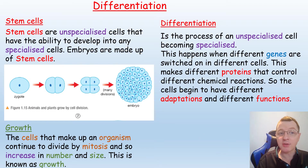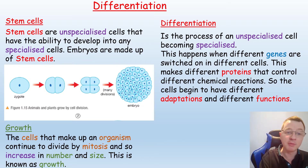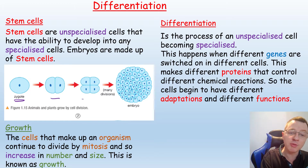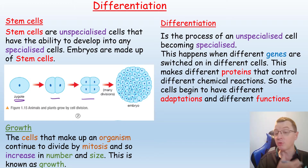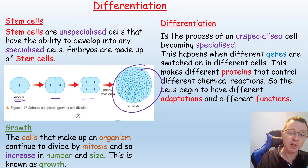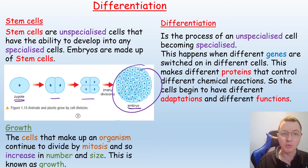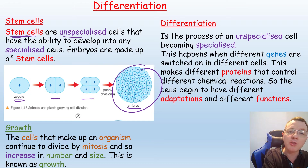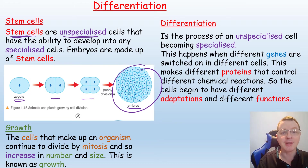Before we can answer how identical embryonic cells become specialised, we need to think more about the cells in the embryo. Our zygote divides by mitosis to form two cells, then four, eight, sixteen, thirty-two cells — eventually a ball of cells known as the embryo, each identical, each a clone. The cells in this embryo are known as stem cells because they are unspecialised, but they have the ability to develop into any specialised cell.